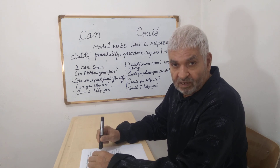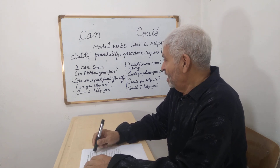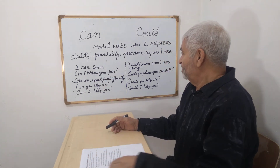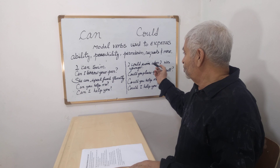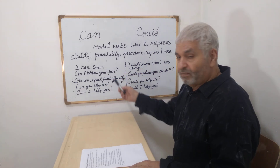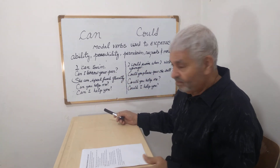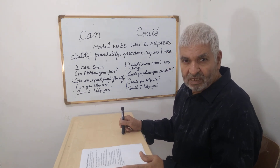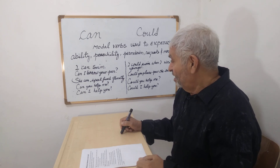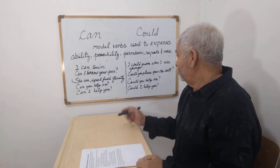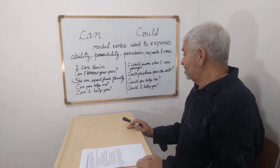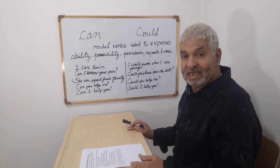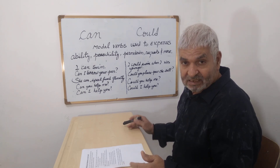We use 'could' for the past. Now we have examples here: 'I can swim', 'I could swim when I was younger'. 'Can I borrow your pen?' — you can also say 'Could I borrow your pen?' 'Could you please pass the salt?' — you can also say 'Can you please pass the salt?'